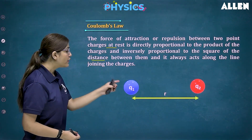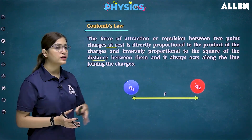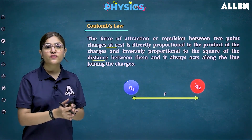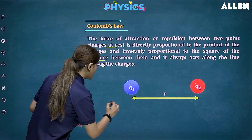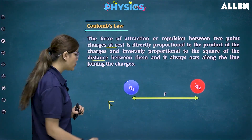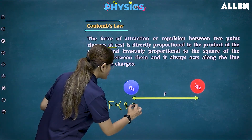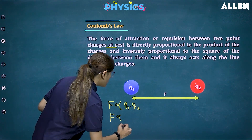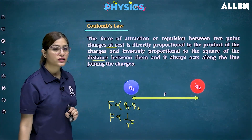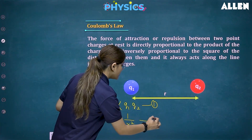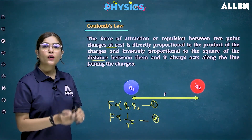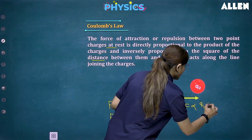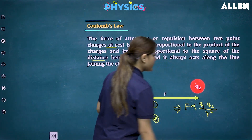As you can see in this figure, we have taken two charges: Q1 and Q2. These two charges are placed at rest and the distance between them is defined by small r. So we can write F is proportional to Q1 times Q2 — that is equation 1 — and F is inversely proportional to r squared — that is equation 2. Combining these two equations: F is proportional to Q1 times Q2 upon r squared.